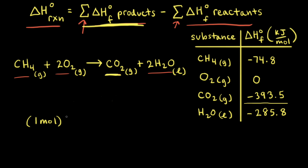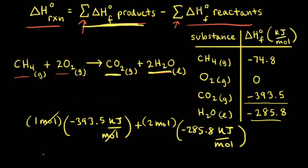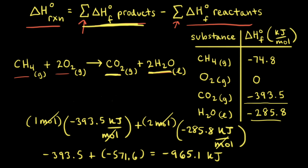We multiply one mole of carbon dioxide by negative 393.5 kilojoules per mole of carbon dioxide. Our other product is two moles of water, so we add two moles of H₂O multiplied by negative 285.8 kilojoules per mole. Moles cancel out, giving us negative 393.5 kilojoules, and for water, negative 571.6 kilojoules. The sum of all standard enthalpies of formation of our products is negative 965.1 kilojoules.